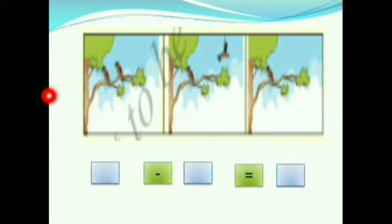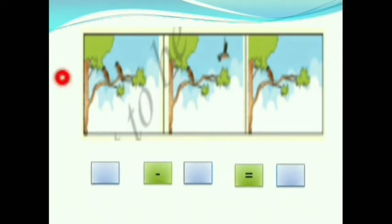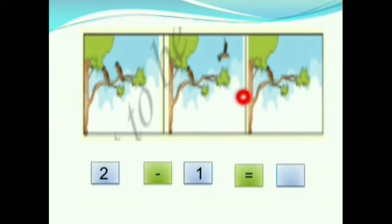Children, see this picture. These are birds. How many birds are there in the first picture? There are 2 birds in the first picture, so we will write 2 in the first box. In the second picture, one bird flew away, so we will write 1 in the second box. How many birds are remaining in the third picture? 1 bird is left out, so we will write 1. Therefore, 2 minus 1 is equals to 1.